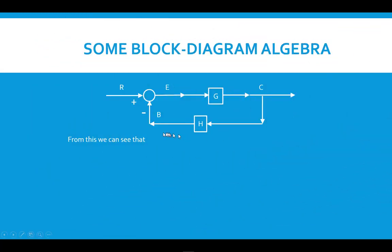Now with this configuration, we can see that C is simply the multiplication of G times E. Traditionally, we put the transfer function of the block first and the signal after that. Also, for this feedback path, B, which is the sensed value, is equal to the actual value times the sensor block diagram, or sensor transfer function.